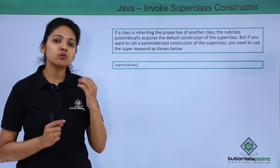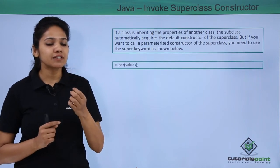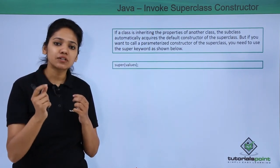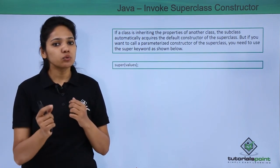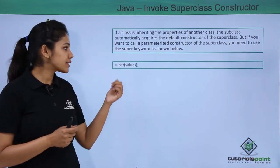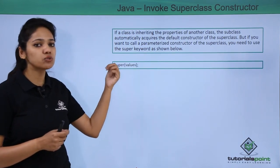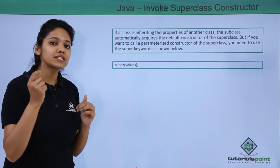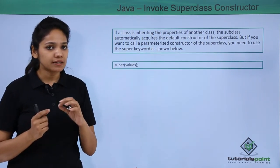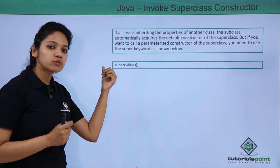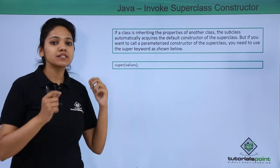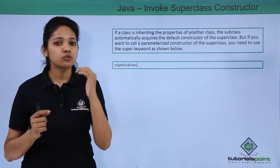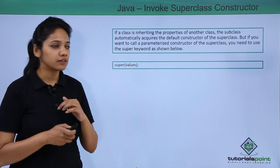If you are trying to call a user-defined constructor which matches the parent class parameterized constructor, you need to use the super keyword. The syntax is: write the super keyword and in the brackets provide the variable or the parameters that match your parent class constructor.